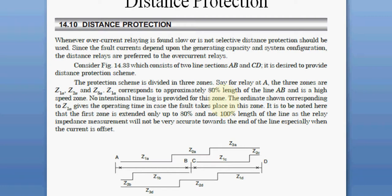The fault current depends upon the system configuration and the generating capacity, so in this case distance relays are preferred over overcurrent relays. It is also found that overcurrent relays are slower and not sensitive in the case of distance protection. In order to remove this inequity we are going to use distance protection.